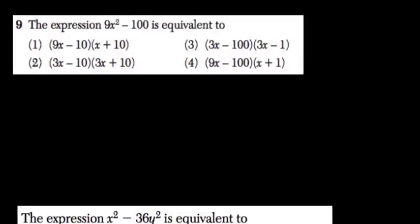Here's the difference of two squares problem, and we know that 9x² is a perfect square, since the square root of 9x² is 3x. And of course 100 is a perfect square, and the square root of 100 is 10.